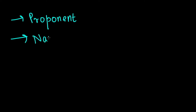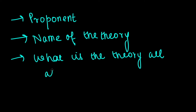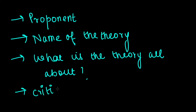Next in the format is the name of the theory, followed by what the theory talks about — what concept it wants us to understand, and what it brings to the world of intelligence. Last but not least is the criticism of the theory, because no theory is perfect. This broad structure applies to all theories, whether under the psychometric or the information processing approach.